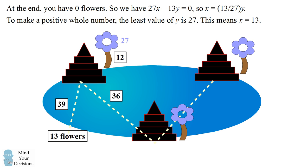This triples to be 36. We leave 27 flowers at the second temple, which leaves us with 9 flowers. This triples when we swim in the pond to be 27. We then leave those 27 flowers at the final temple, which leaves us with 0 flowers. So that's the solution to this problem.